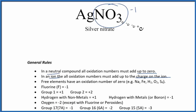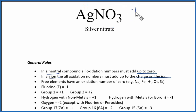So for this compound to be neutral — zero — silver has to be plus one. I now know the oxidation number for silver. And now we can look at the oxygen: oxygen is always minus two, except with fluorine or peroxides. So the oxygen is minus two.